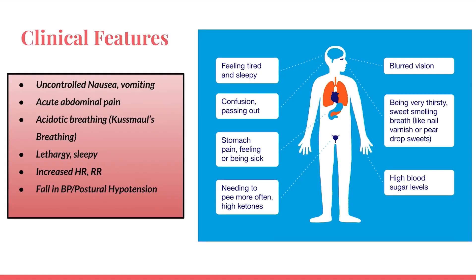Clinically, the patient presents with nausea, vomiting, acute abdominal pain, and confusion. There is acidotic breathing — Kussmaul breathing, a disproportionate hyperpnea. The patient is very thirsty with a sweet, fruity odor of breath, very high blood sugar, lethargy, increased heart rate and respiratory rate, fall in blood pressure or postural hypotension, blurred vision, and polyuria.